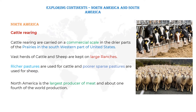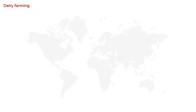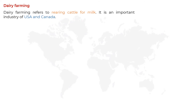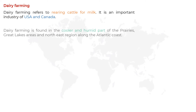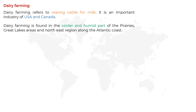Next we are going to learn about dairy farming. Dairy farming refers to rearing cattle for milk. It is an important industry of the USA and Canada. Dairy farming is a type of agribusiness involved in the production of milk. Animals which are used for milk production in the dairy farm are called dairy animals. It is a very important industry of USA and Canada.